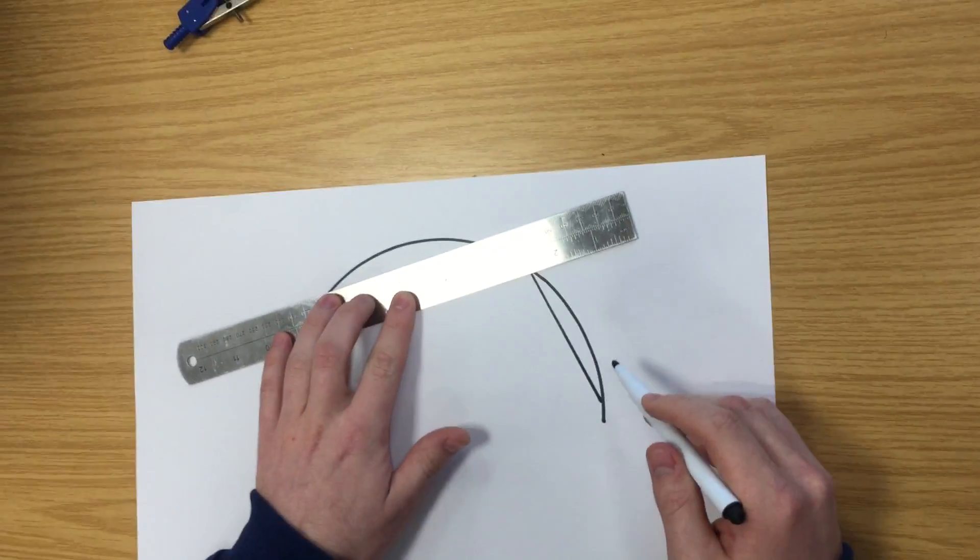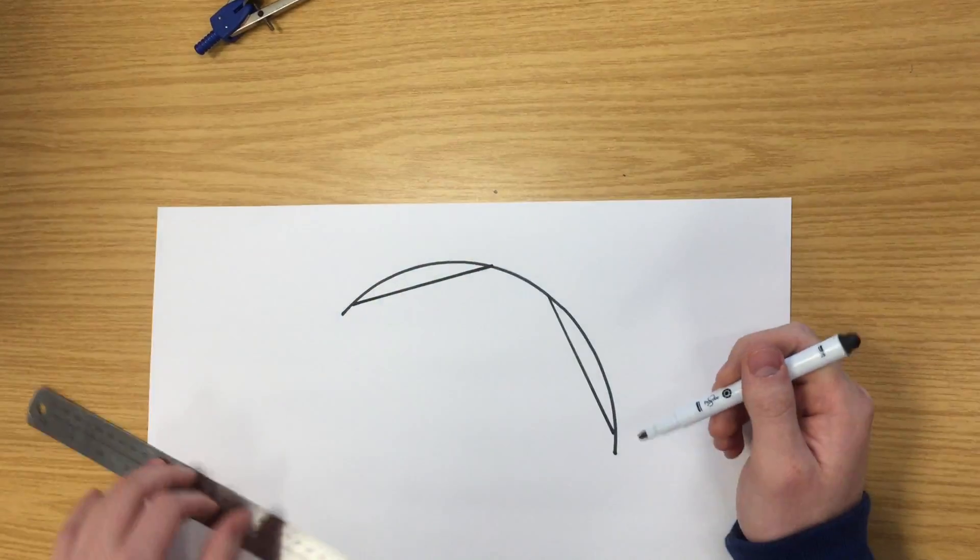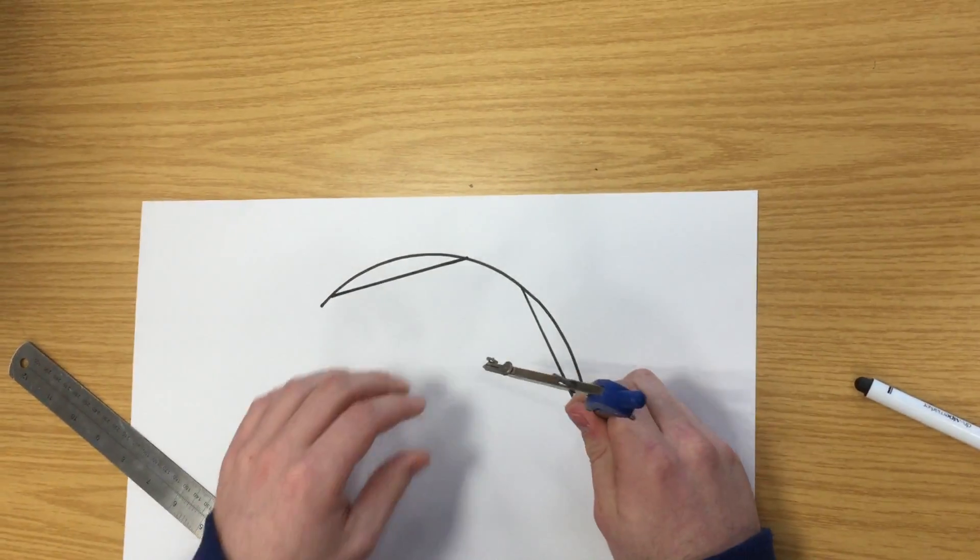We'll draw the chords anywhere on the curve, and from those chords we're going to bisect them.